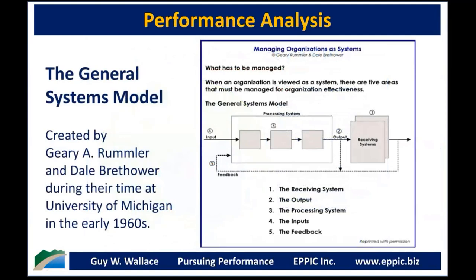This is the General Systems Model, created by Gary Rummler and Dale Brethauer at the University of Michigan in the early 1960s. It's central to how I think about things. I take a process or systems view. On the left there's the input, which flows into the processing system where tasks happen — both physical and cognitive tasks — producing the output on the right, which goes into a receiving system. Every output is an input downstream.